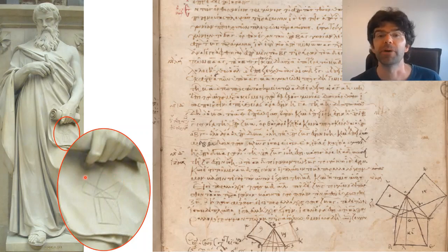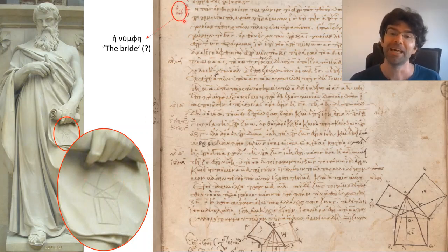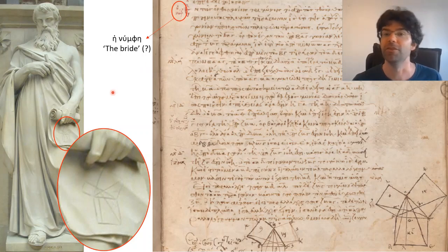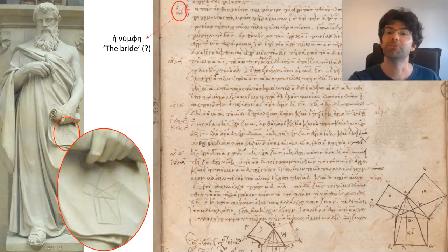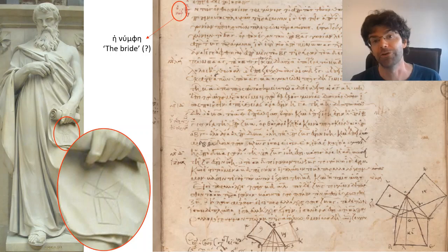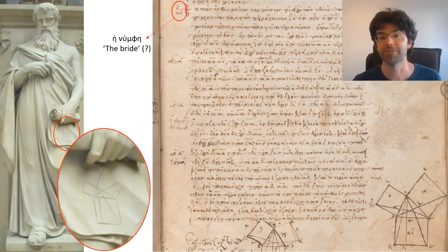And in this 12th century manuscript, we see that the theorem had even acquired its own nickname, hernymphae, which might mean the bride, and has led to the modern name the bride's chair for the diagram. Well, I hope you've also been impressed with Euclid's proof. If you've enjoyed the video, do share it around and consider subscribing to the channel to hear about future videos about ancient Greek mathematics, including the follow-up video to this one, which is going to be about that problem from Heron. And thank you very much for watching.